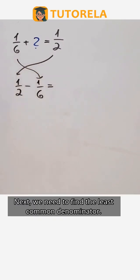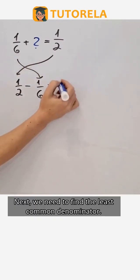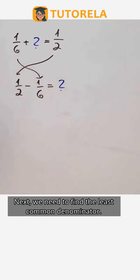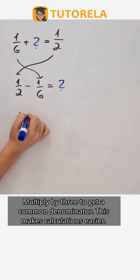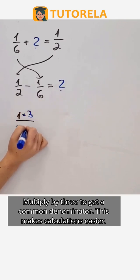Next, we need to find the least common denominator. Multiply by 3 to get a common denominator. This makes calculations easier.